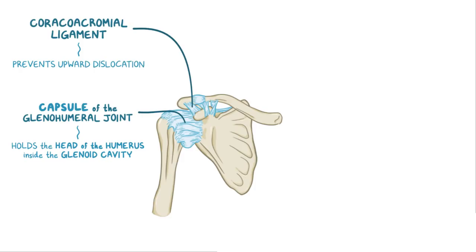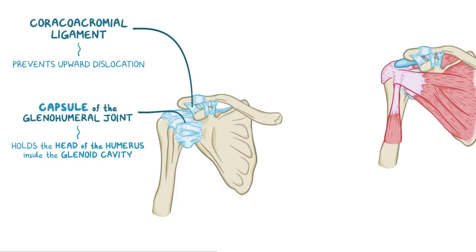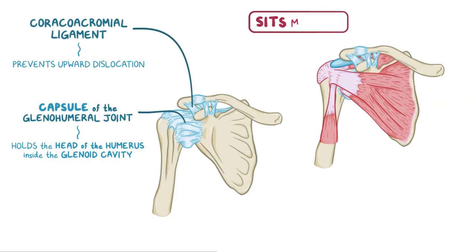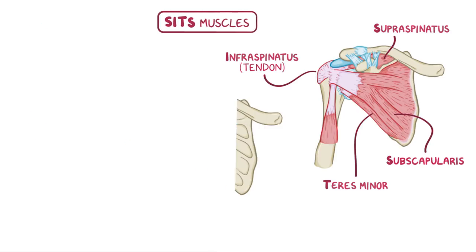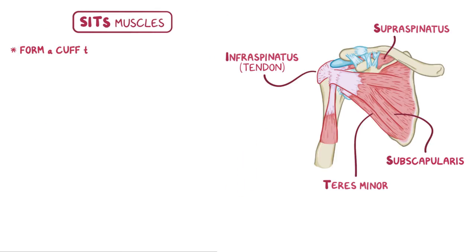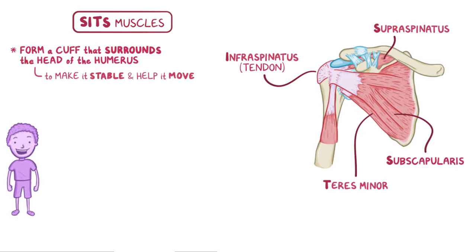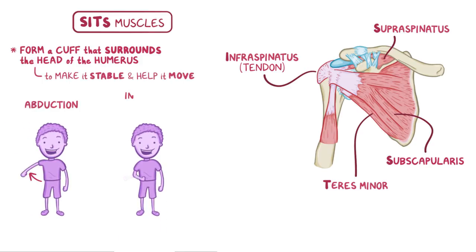In addition to these ligaments, the shoulder is supported by the four rotator cuff muscles, also called the SITS muscles, for supraspinatus, infraspinatus, teres minor, and subscapularis. The SITS muscles form a cuff that surrounds the head of the humerus to make it stable and help it move, specifically in abduction as well as internal and external rotation.